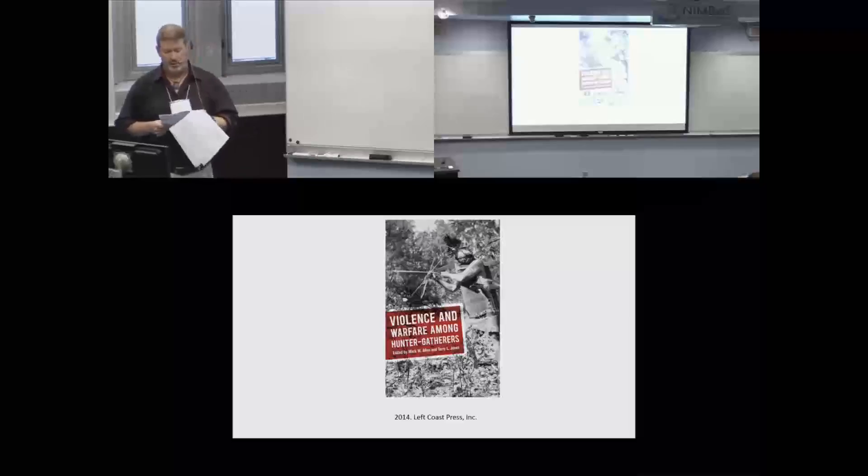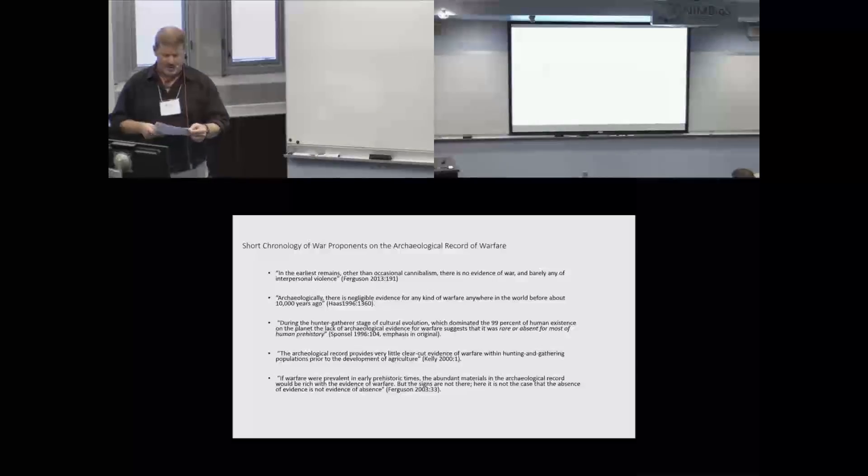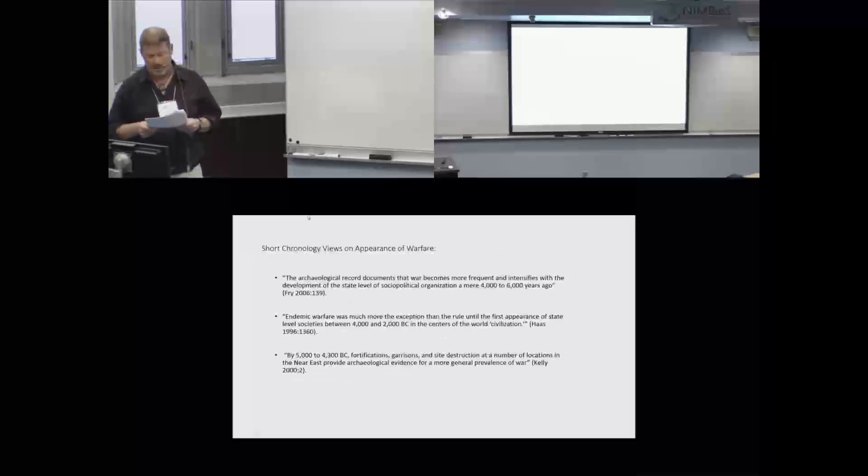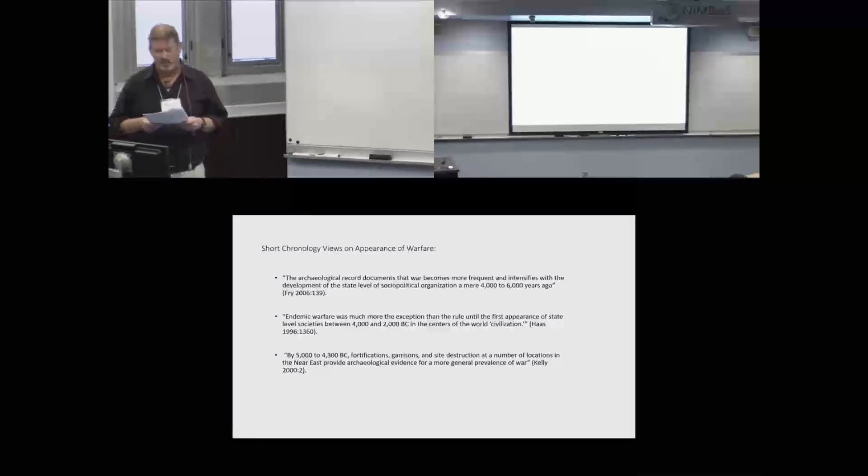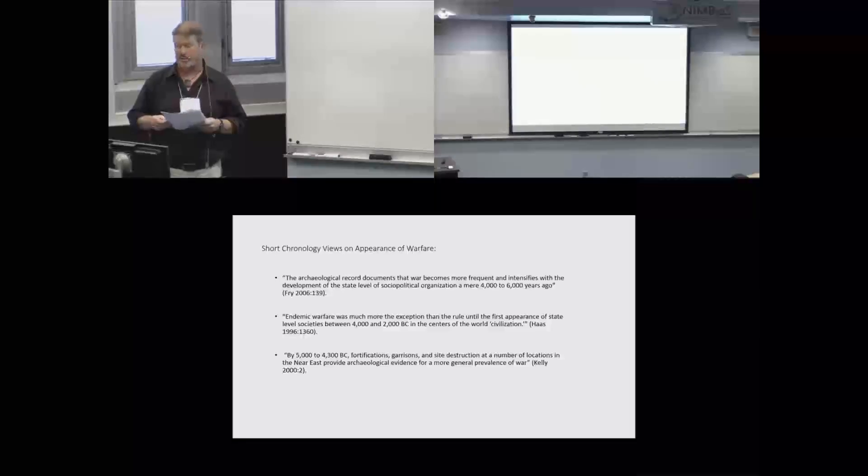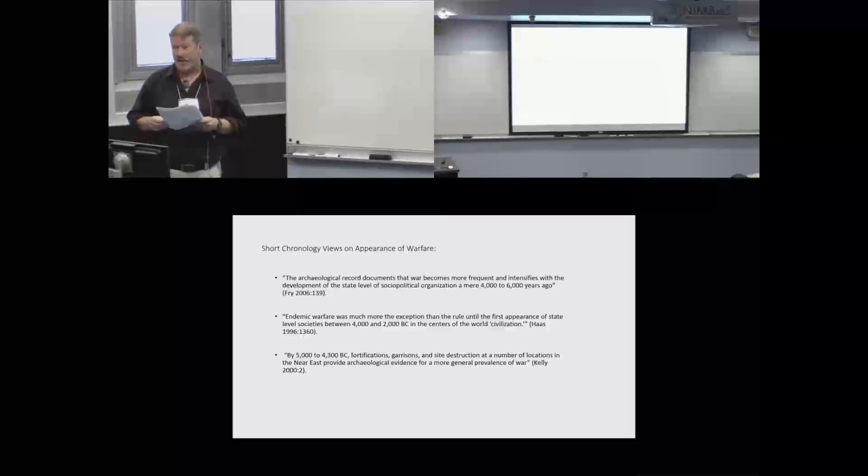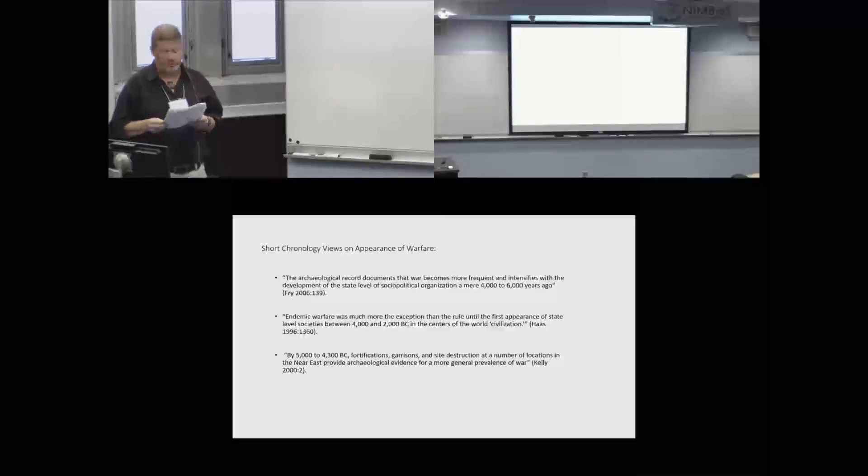The second evidentiary source that short chronology proponents point to is the archaeological record. Since the archaeological record provides direct evidence of human activity, not the indirect evidence furnished by ethnographic analogy, short chronology proponents can be forgiven a sense that the jury has returned and rendered an unequivocal verdict that prior to the Holocene, humans were peaceful. Nonetheless, this is a rush to judgment because it fails to consider a crucial question. If war was practiced prior to the Holocene, what are the chances that we would actually find unambiguous archaeological signatures of it over 12,000 years later?